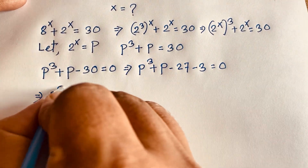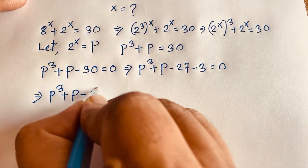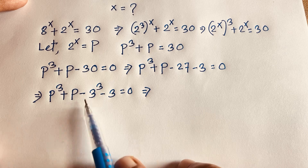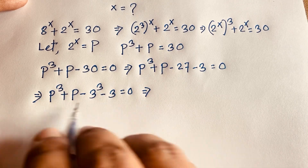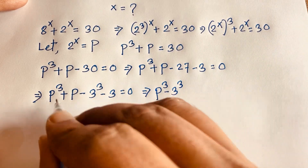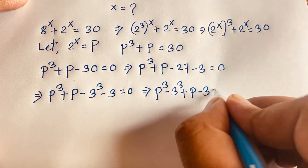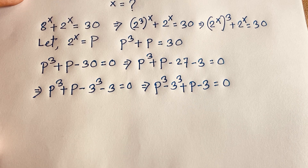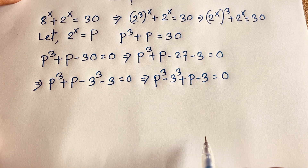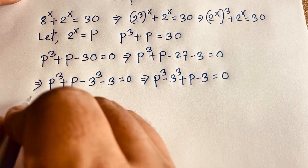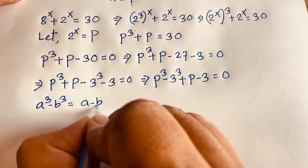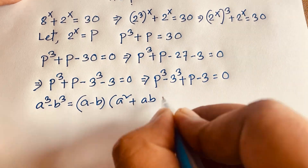We find here: p³ − 3³ + p − 3 = 0, since 27 = 3³. Rearranging, this is p³ − 3³ plus p − 3 = 0. You know the identity a³ − b³ equals a minus b, times a squared plus ab plus b squared.